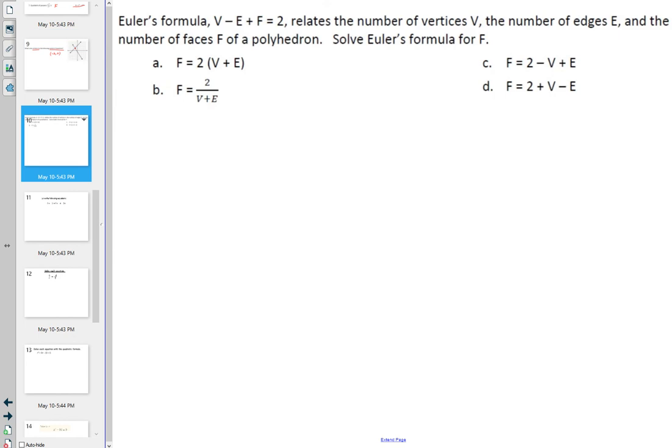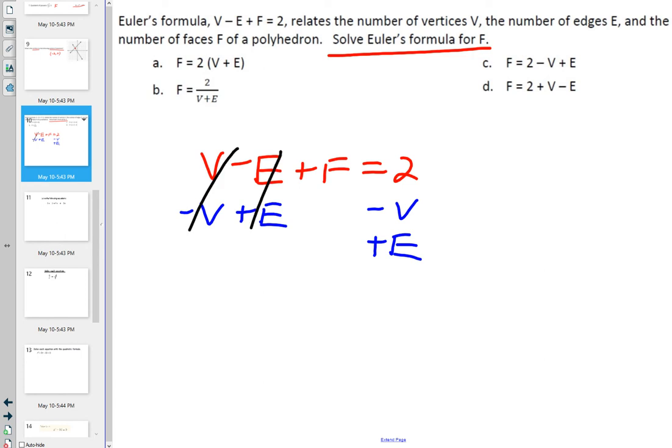Euler's formula, the thing he was, he never relates to the number of vertices. Who cares? Solve Euler's formula for f. So if b minus e plus f is equal to 2, let's get f by itself. So that would be minus b plus e, minus b plus e. And f is equal to 2 minus b plus e. There's his favorite answer.